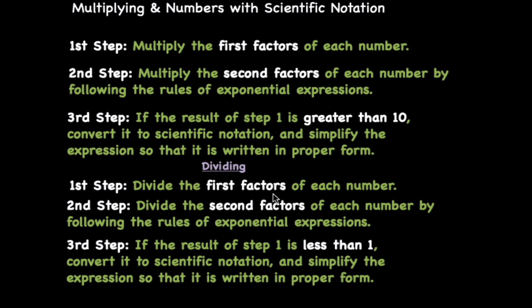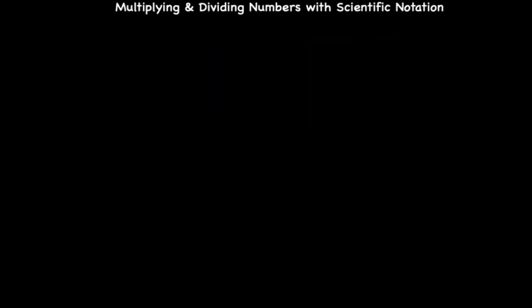For dividing, in the first step we divide the first factors. In the second step, we divide the second factors of each number. In the third step, we pay close attention — because if the result of step one is less than one, then we have to convert it to its proper form. Let's go ahead and get started.